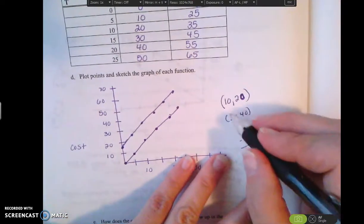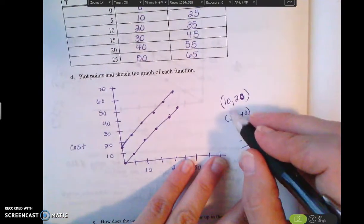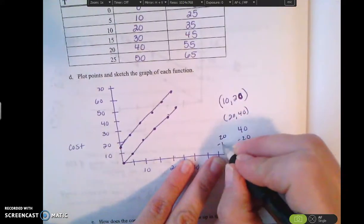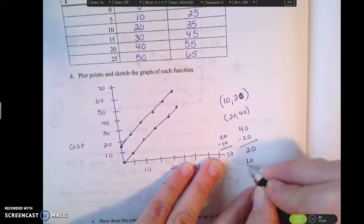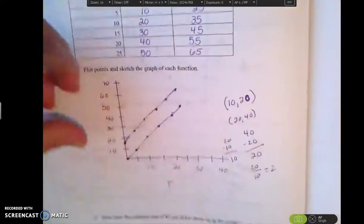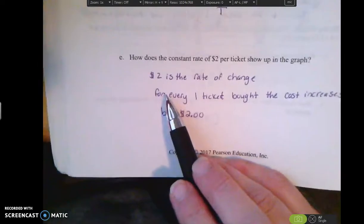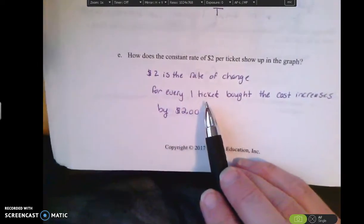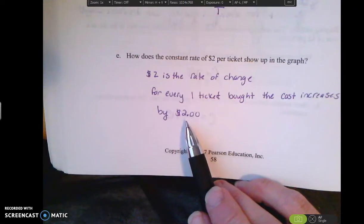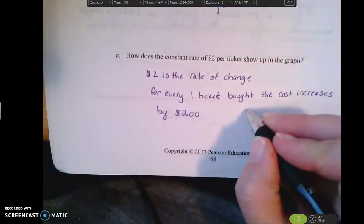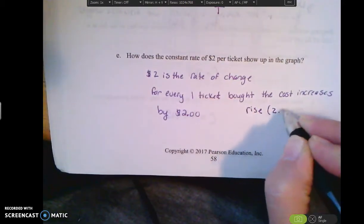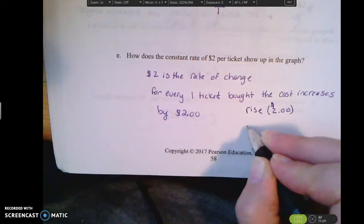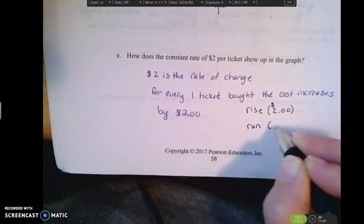But the difference here is that my x values are also changing. So 20 divided by 10 is 2. So what does the 2 come out to be in this one? 2 is the rate of change. So for every one ticket that you buy, the cost increases by $2. So in this case, the rise is going to be $2 and the run is one ticket.